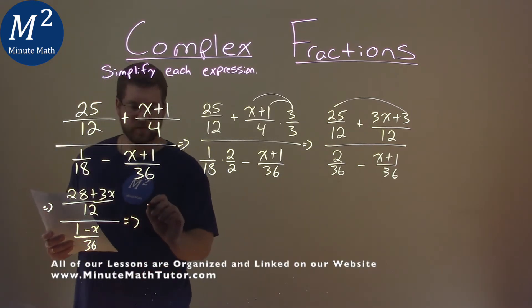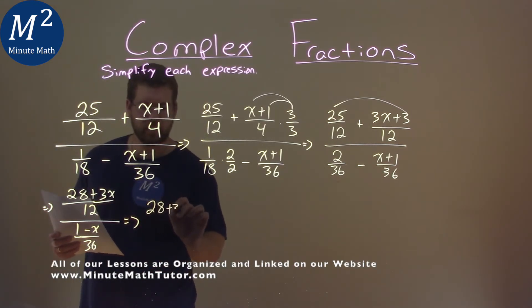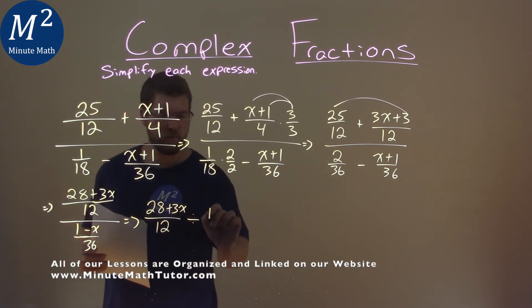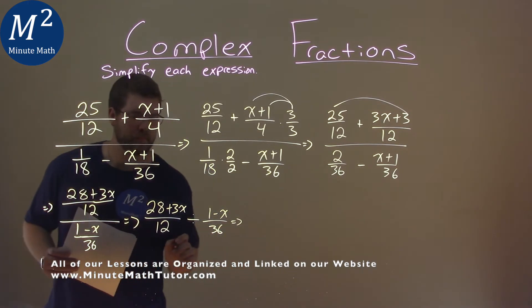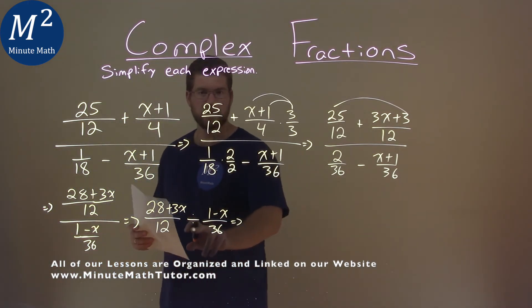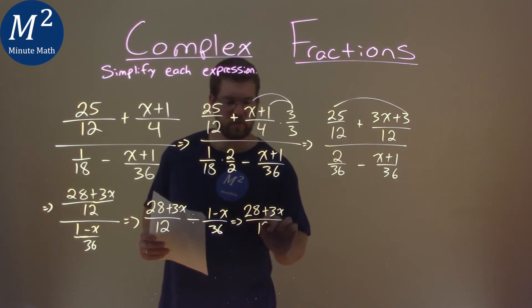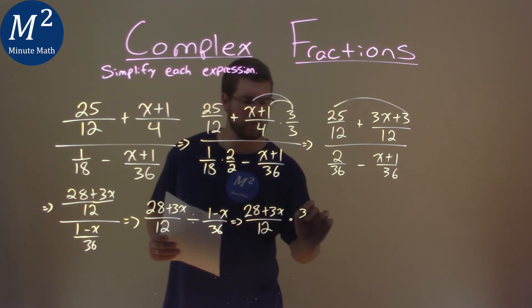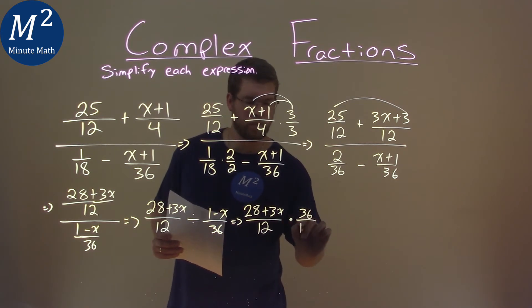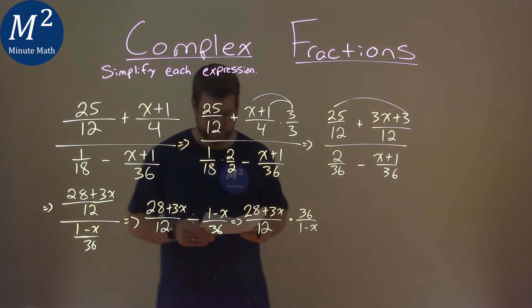Now, in this big division, this is how I like to write it: 28 plus 3x over 12 divided by 1 minus x over 36. What that does, instead of division, we can write that as multiplication: 28 plus 3x over 12 multiplied by 36 over 1 minus x.